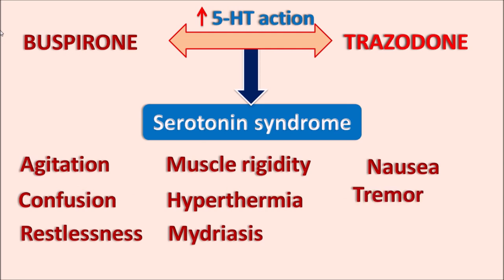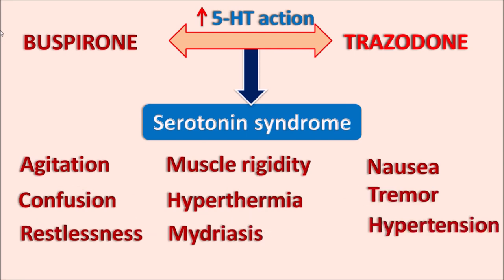Additional symptoms of serotonin syndrome include mydriasis (pupillary dilation), nausea, vomiting, tremors, and hypertension. In some cases it may also lead to seizures or even death. This is a significant interaction between buspirone and trazodone — since both drugs act on serotonergic transmission, this combination can increase 5HT levels and precipitate serotonin syndrome. Therefore, even though both drugs reduce anxiety, they should not be combined due to the risk of this fatal syndrome.